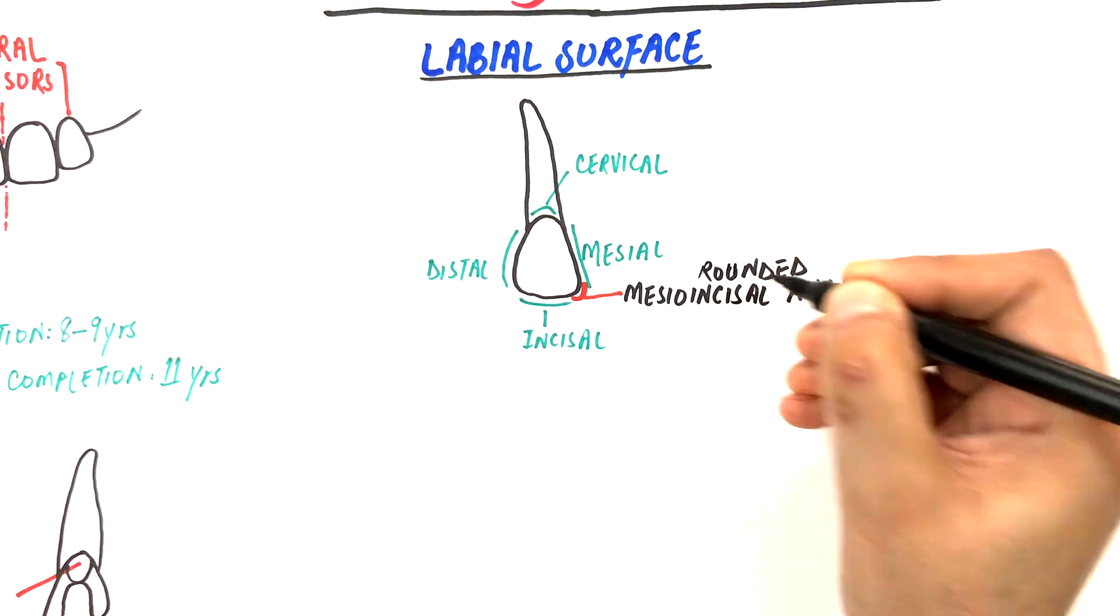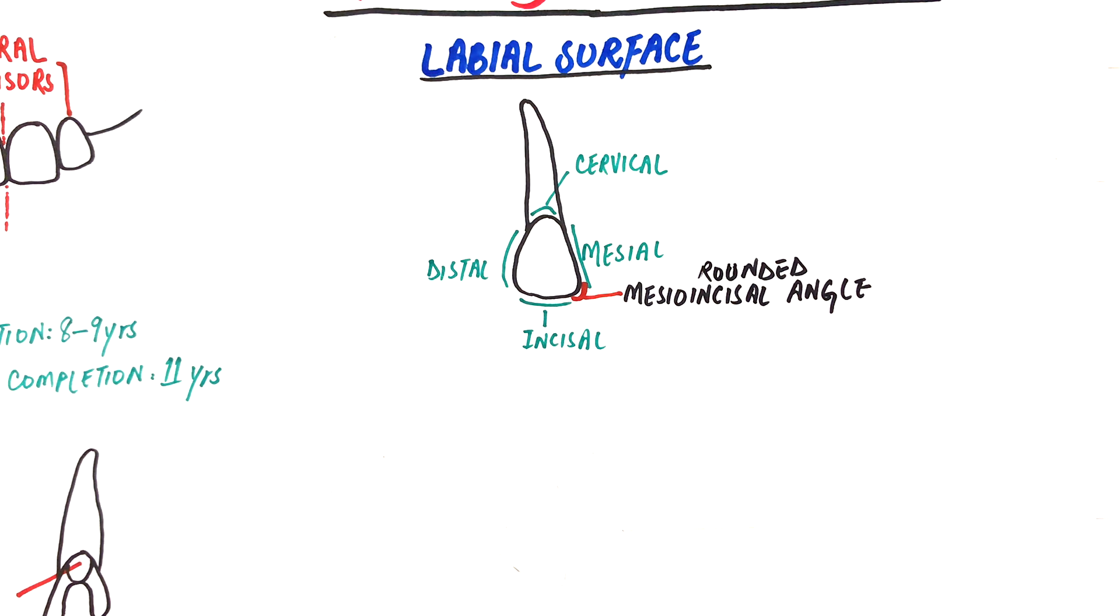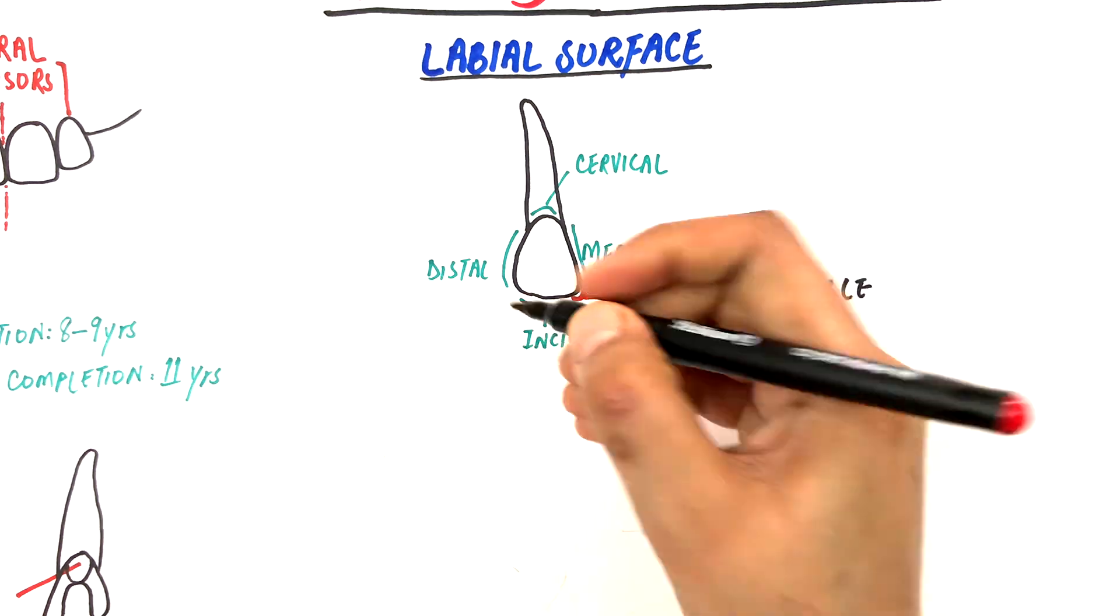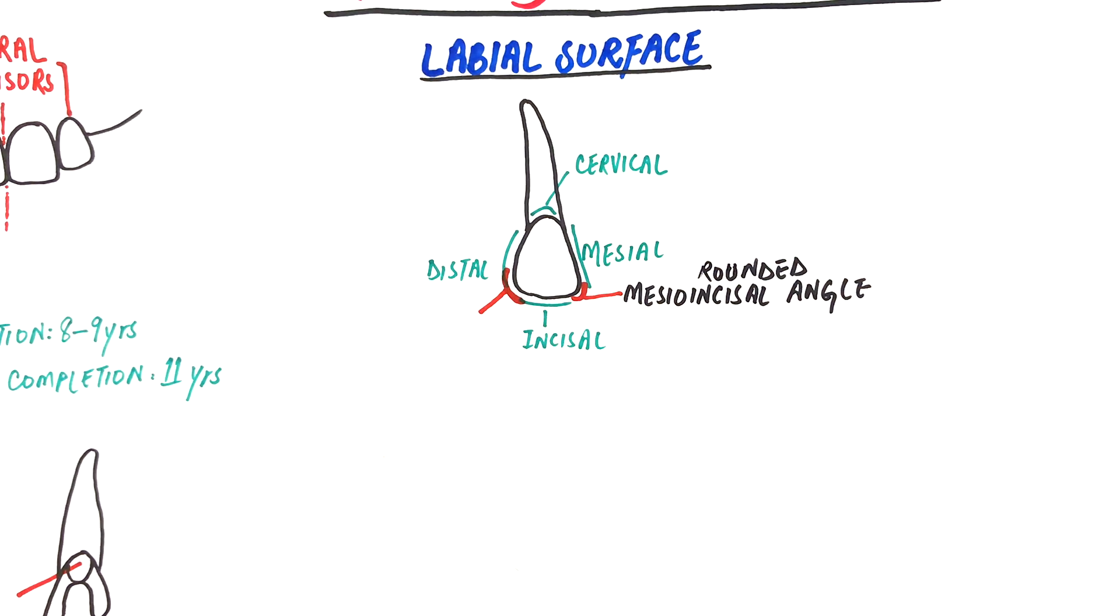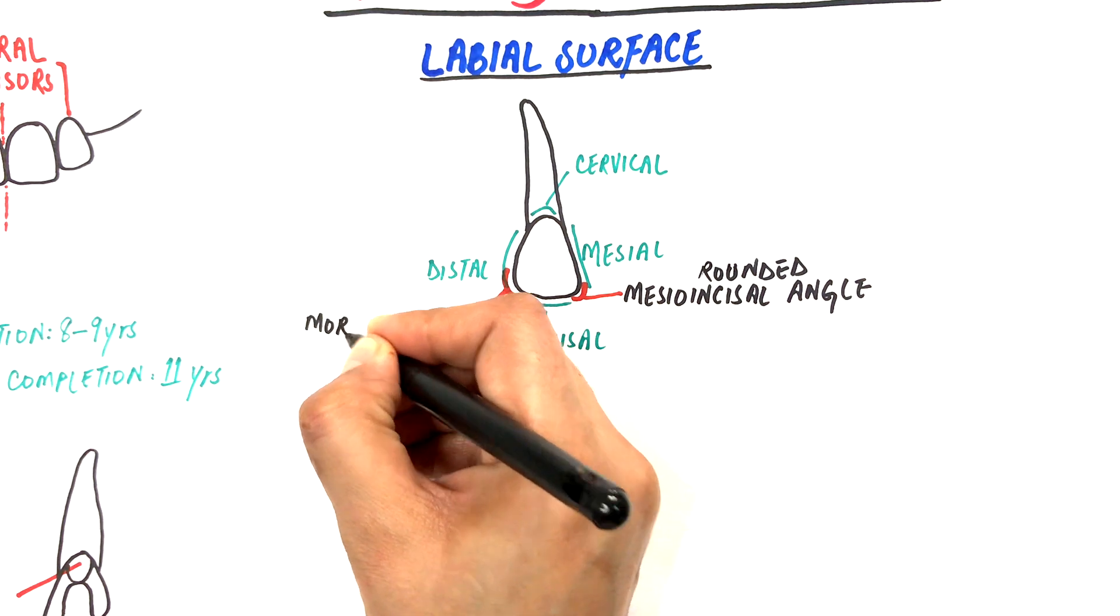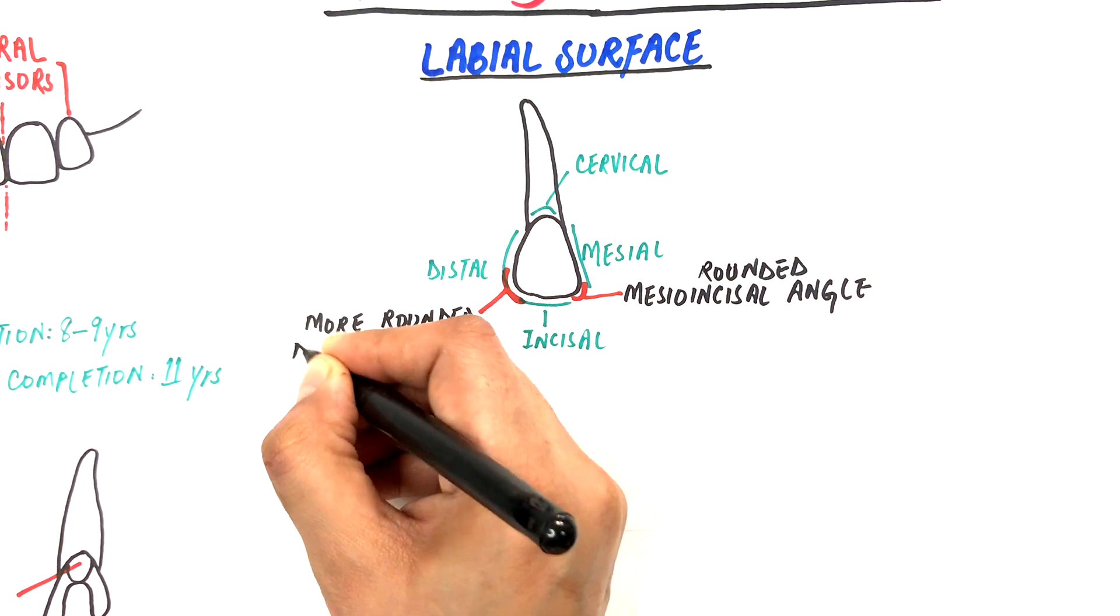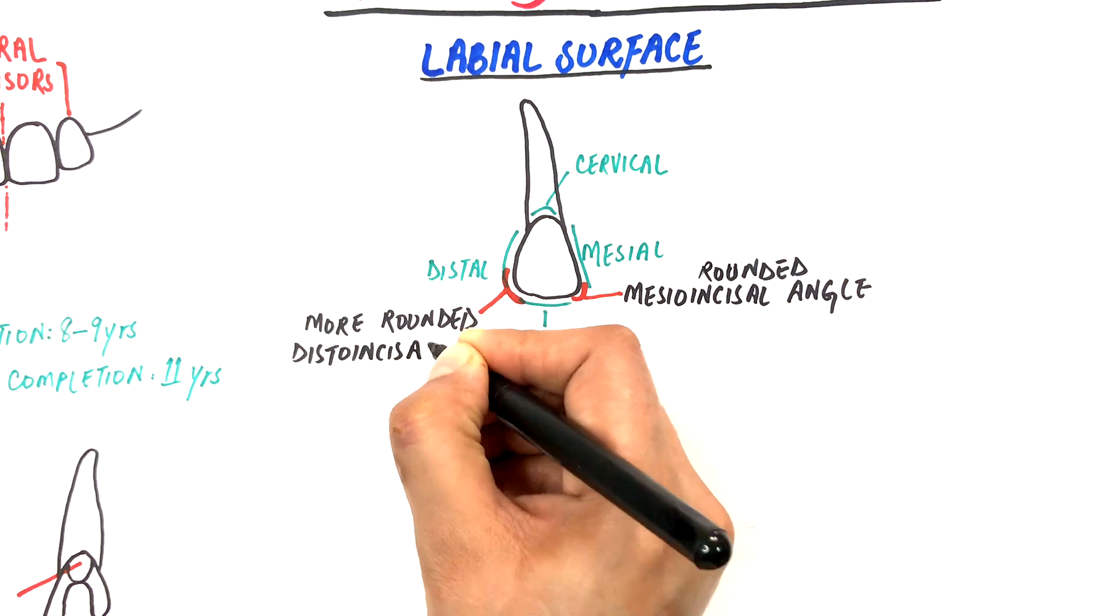The distal outline is always more rounded when compared with the distal outline of the maxillary central incisors. The distoincisal angle is noticeably more rounded than its central incisor counterpart. In fact, it's the most rounded incisal angle of any incisor in either arch.